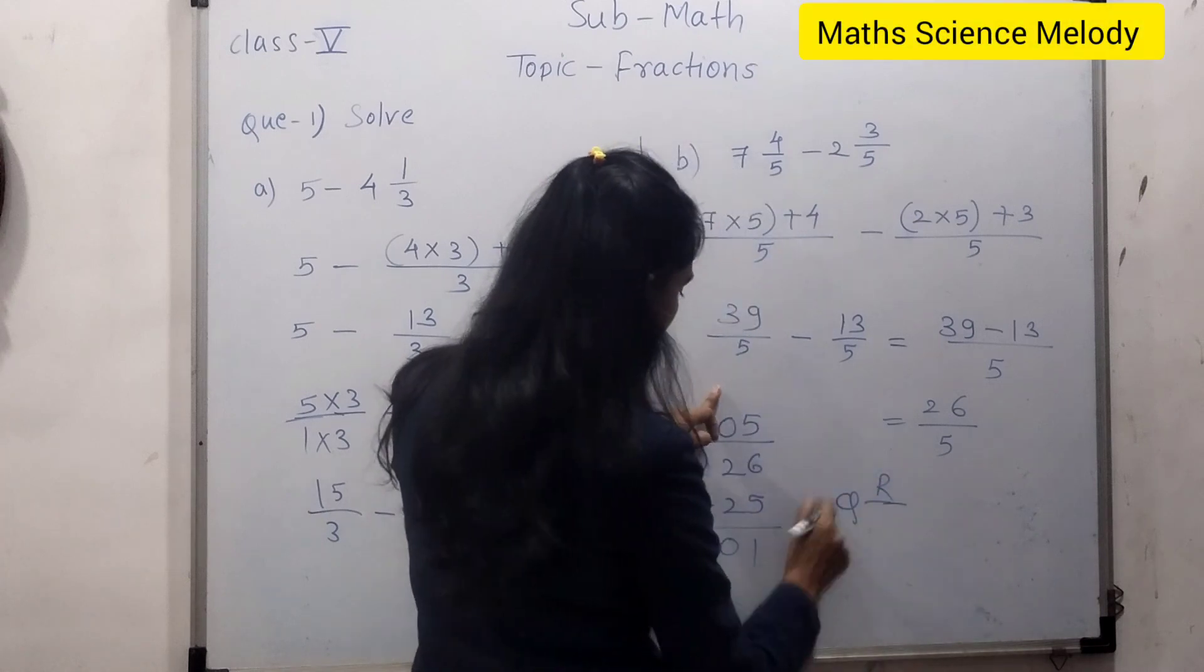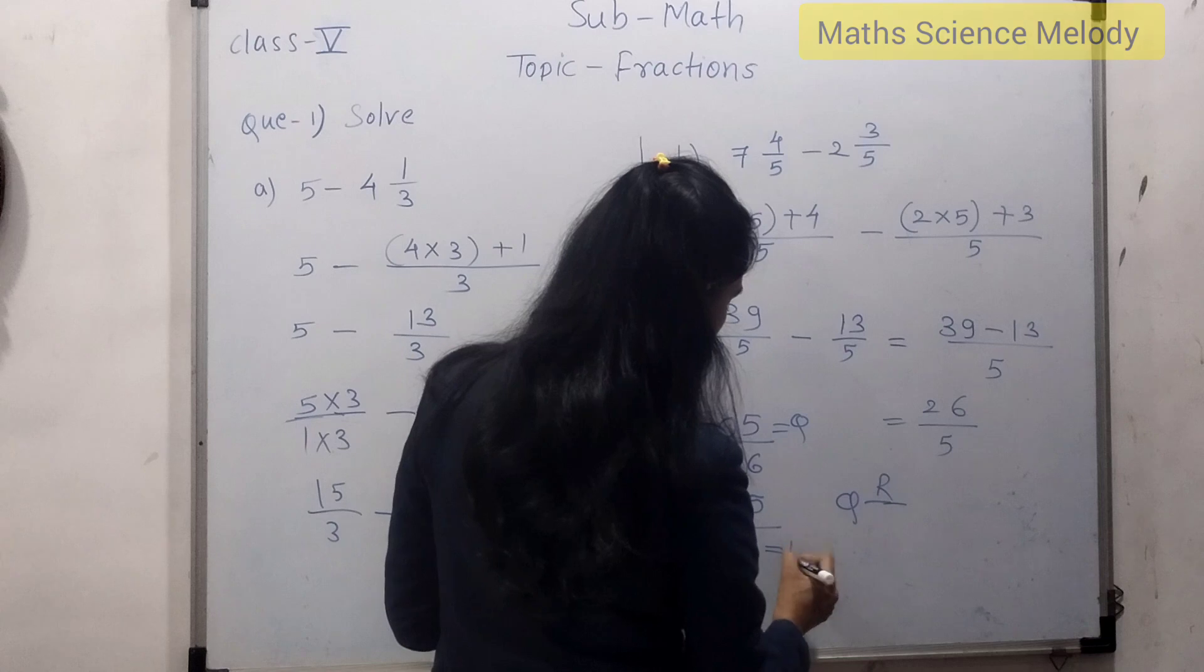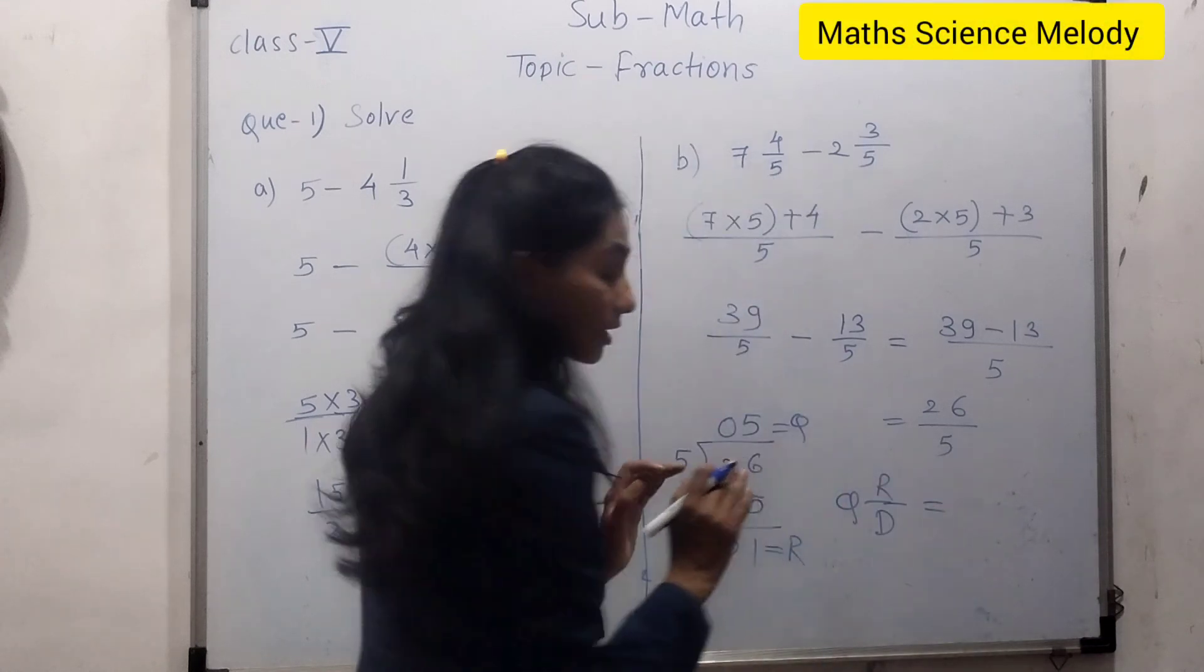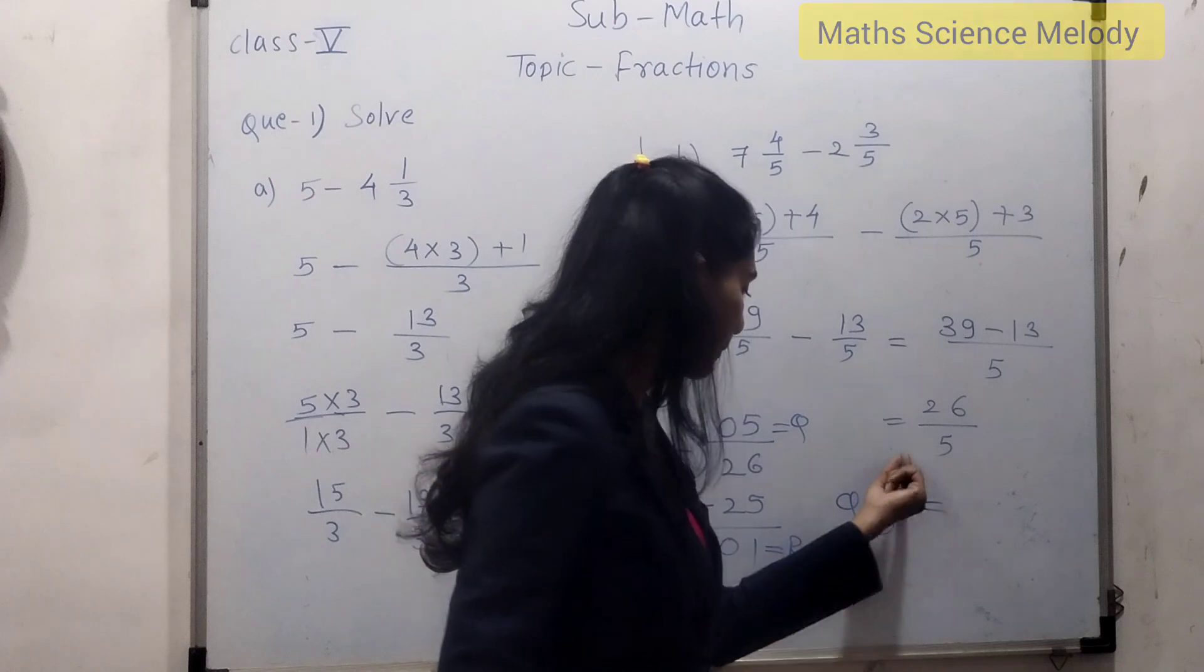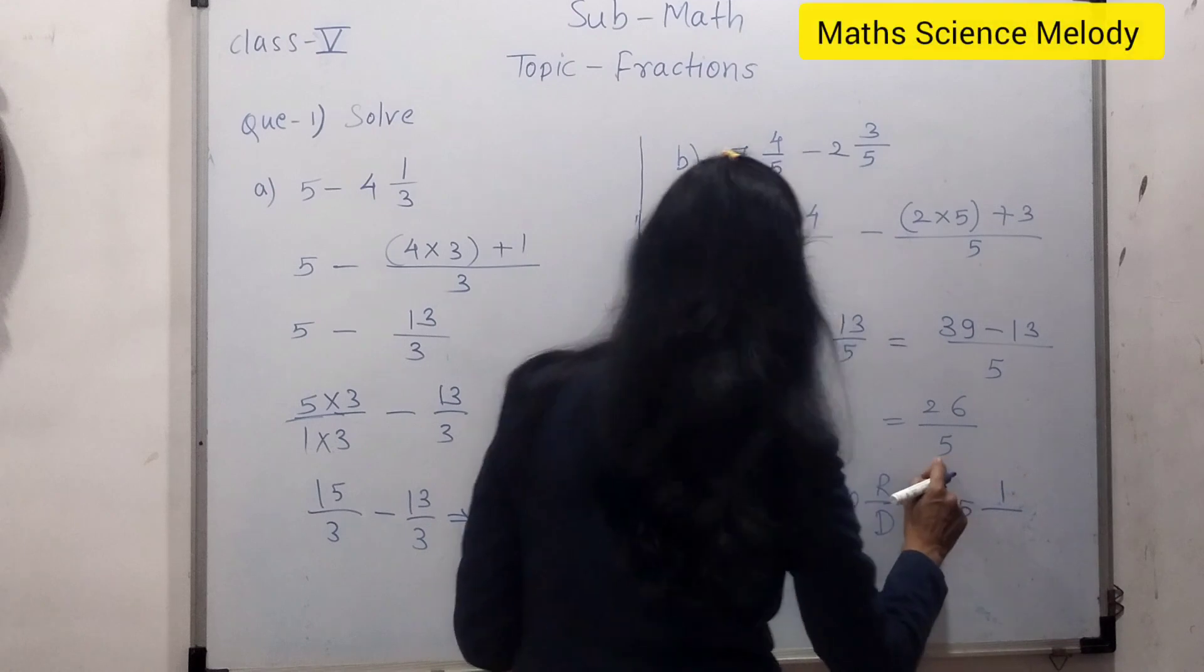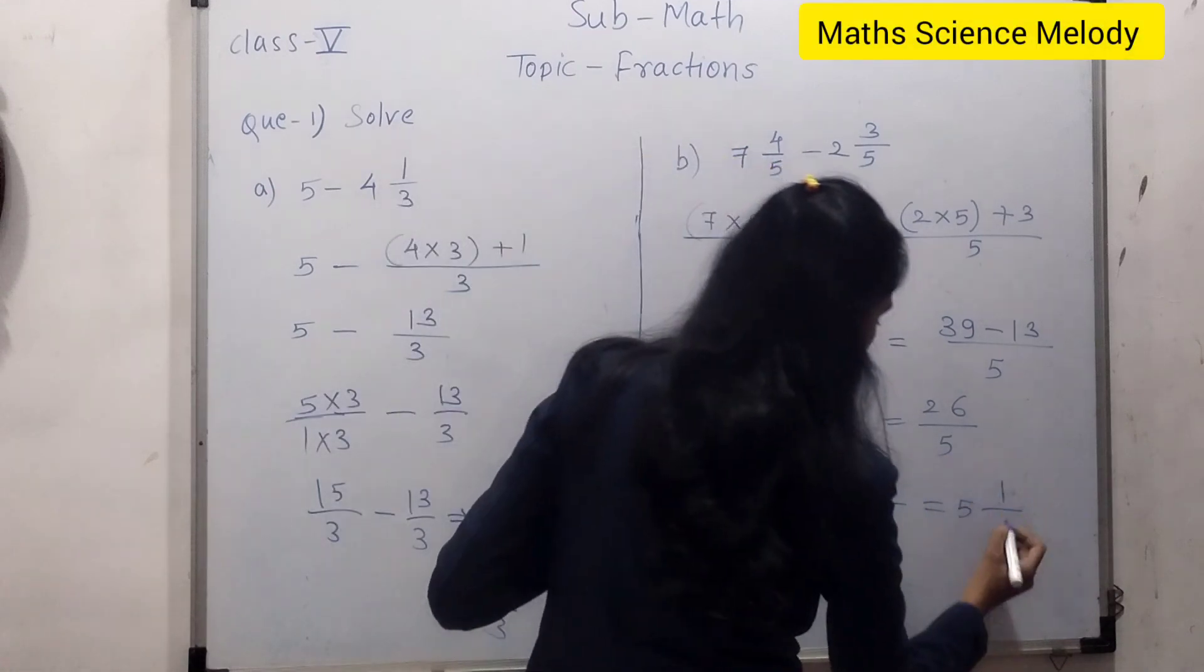Quotient, which is 5. Reminder is R, which is 1. So R upon D. Just remember this format: quotient, remainder and divisor. Here quotient is 5, remainder is 1, and divisor will be same, which is denominator 5.